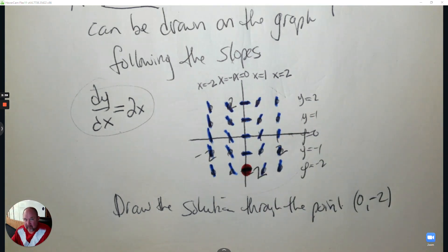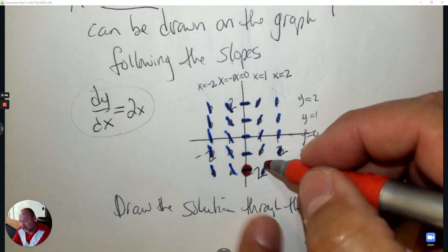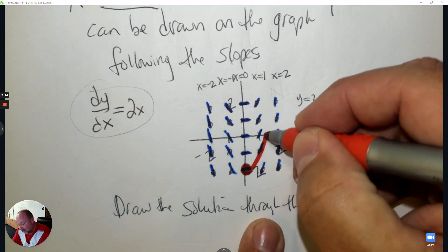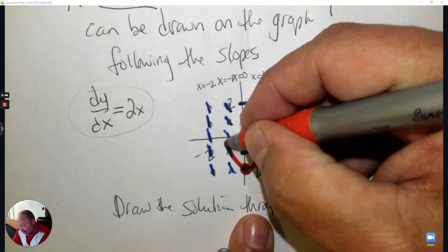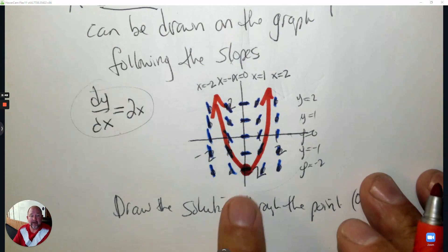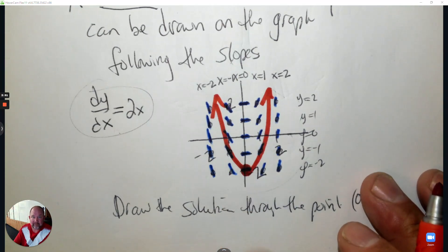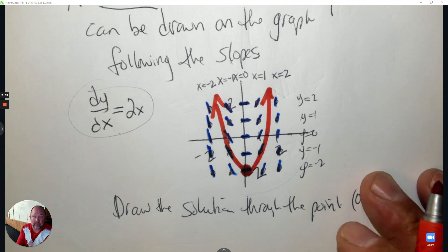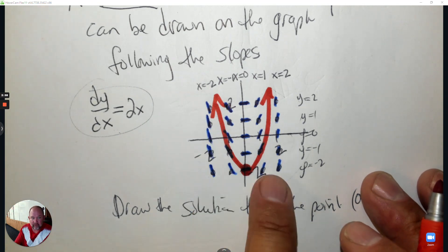Then I would follow the lines, and it would tell me how to draw it. At 0 and negative 2, to the right it's rising steeply, and to the left it's rising steeply. Just recognize that a horizontal line most of the time means a turning point, because when the derivative is 0, it's a turning point.